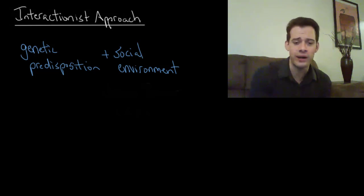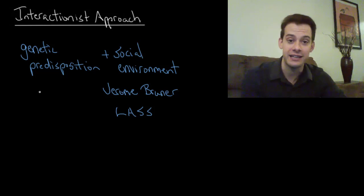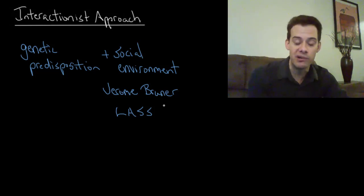This brings us to what a researcher named Jerome Brunner referred to as the language acquisition support system. This was in contrast to Chomsky's language acquisition device, the idea of this genetic predisposition. So Brunner suggests we have this language acquisition support system. These are the features of the social environment that help language ability to emerge.